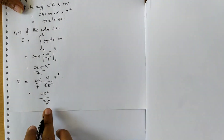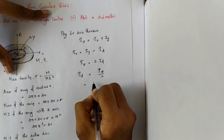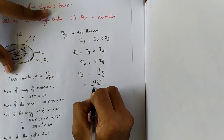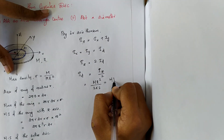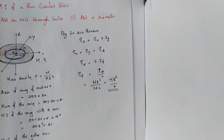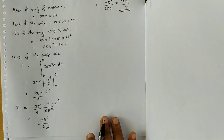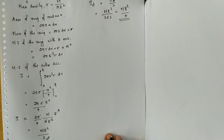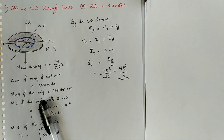We already found IZ equals M R square by 2. Therefore I diameter equals M R square by 2 divided by 2, which equals M R square by 4. Thus M R square by 4 is the moment of inertia of the disc about the diameter, and M R square by 2 is the moment of inertia about the axis passing through the center and perpendicular to the disc.